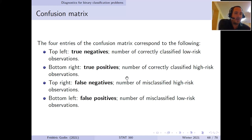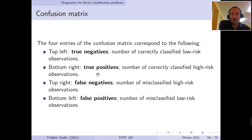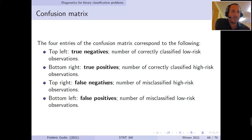The four entries of the table have names. Top left: true negatives — correctly classified low-risk observations. Bottom right: true positives — observations that are truly risky and classified as high-risk. Top right: false negatives — the very problematic ones, high-risk observations classified as non-risky. Bottom left: false positives — low-risk observations that we shouldn't be worried about but are flagged as high-risk.